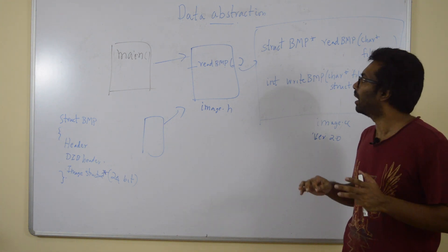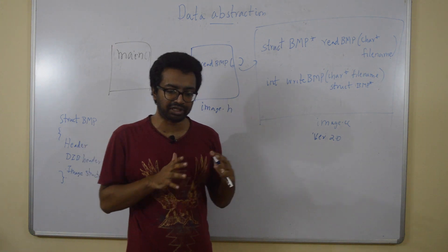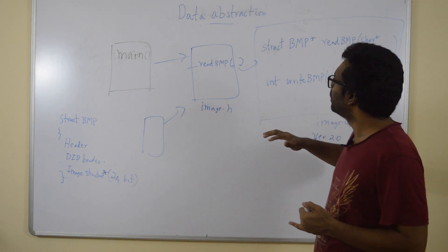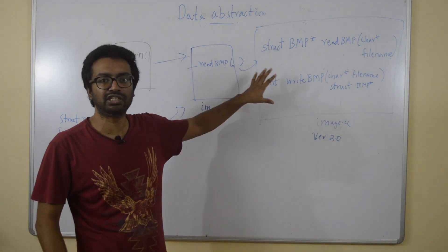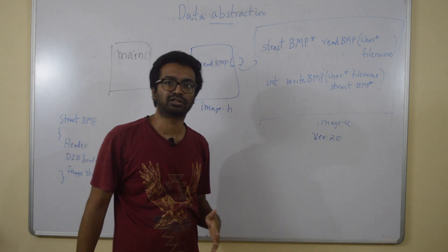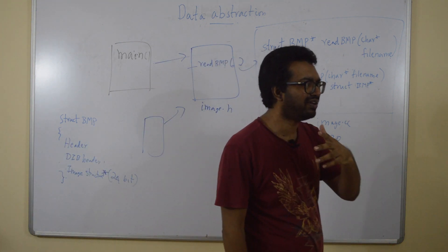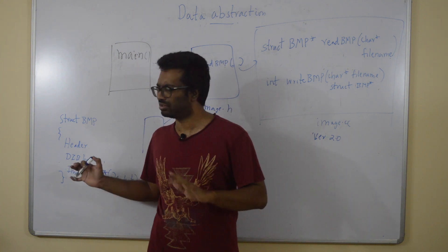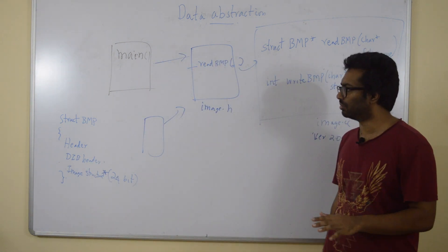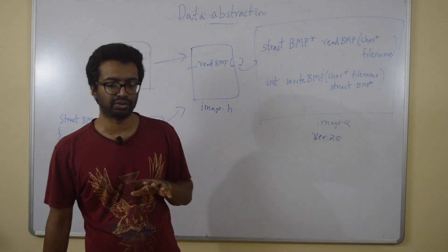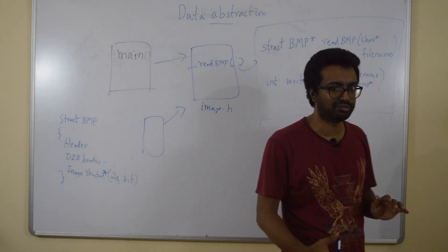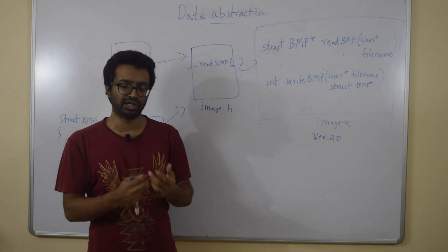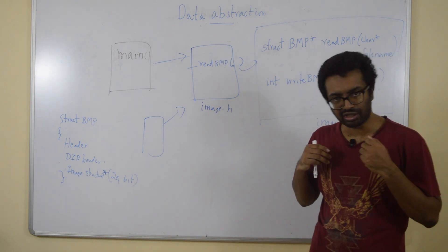If we had the flexibility to build a program such that the main programmer doesn't need to know the internals, we could modify image.cc freely. In C you can work around with unions and other techniques, but the flexibility is limited. C++ gives us an easier and more natural way to fix this problem.